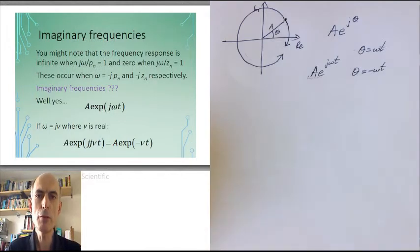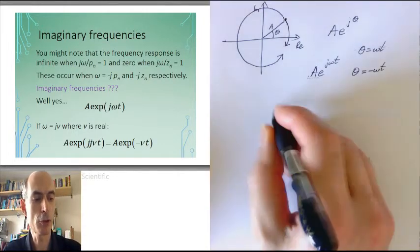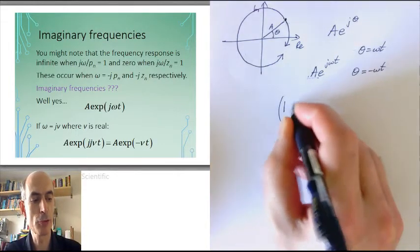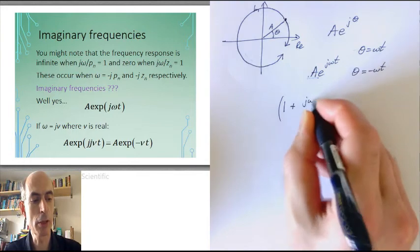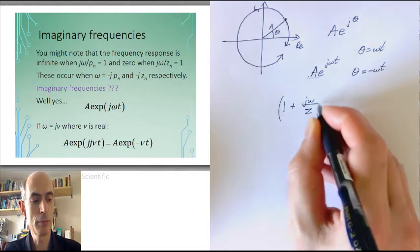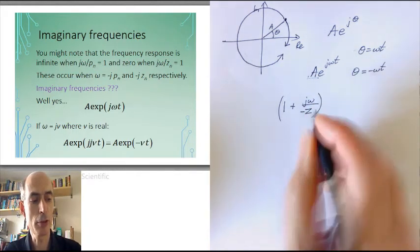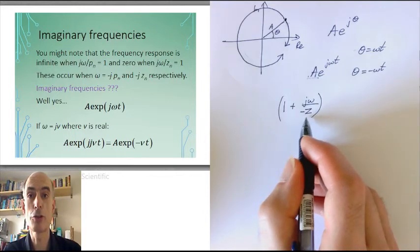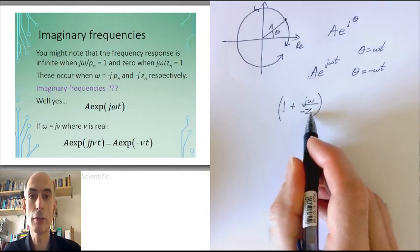Now, you may have noticed something rather odd about poles and zeros. They have the dimensions of frequency. They have to, because we express them in terms of one plus j omega over minus z, for example, as the contribution of a zero to the frequency response.